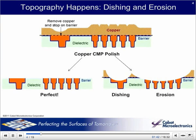One of the serious challenges in polishing semiconductor devices is that we often have to polish two very different materials, such as copper and a dielectric oxide, such as silica. Silica is a hard, brittle, inert ceramic, while copper is a soft, ductile reactive metal.